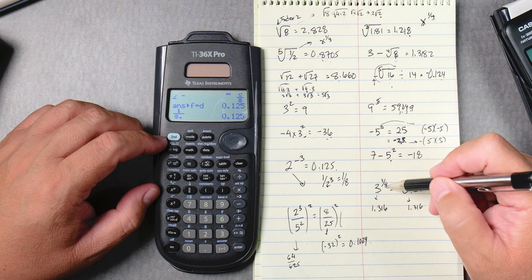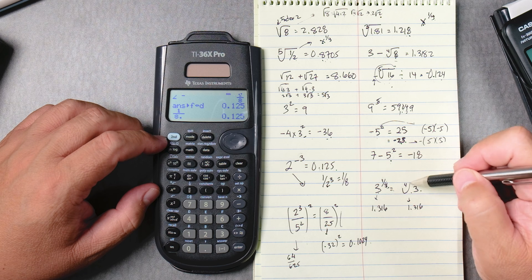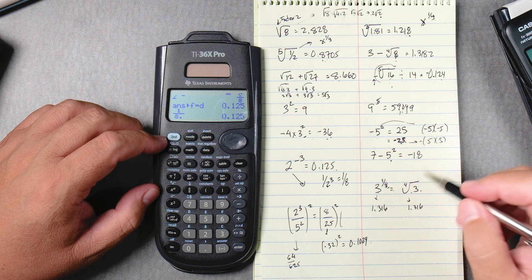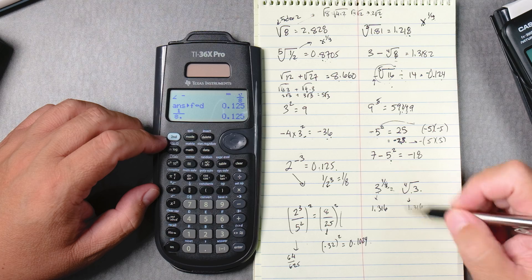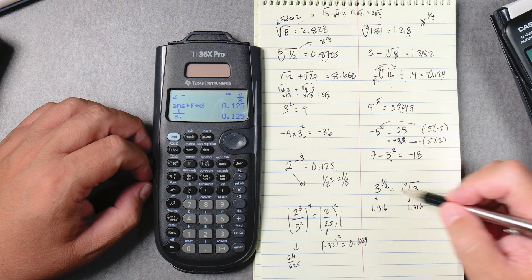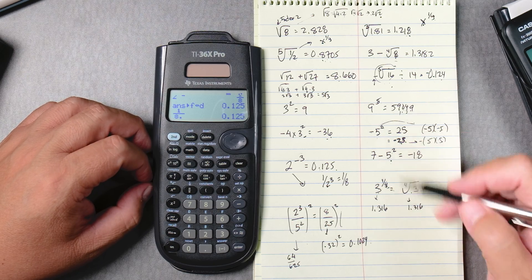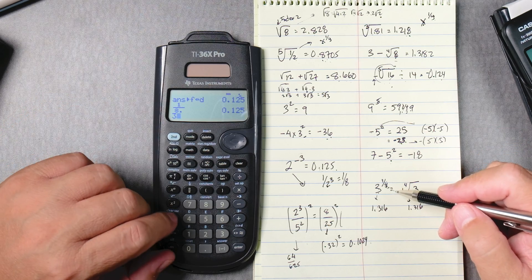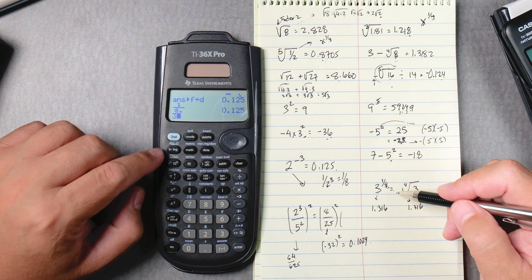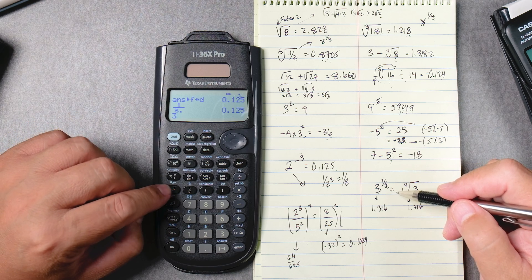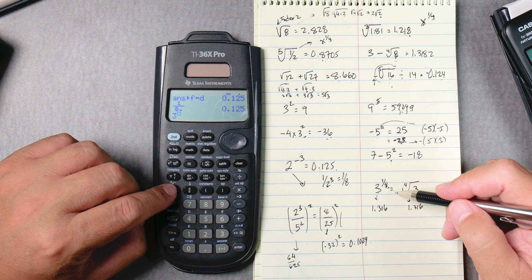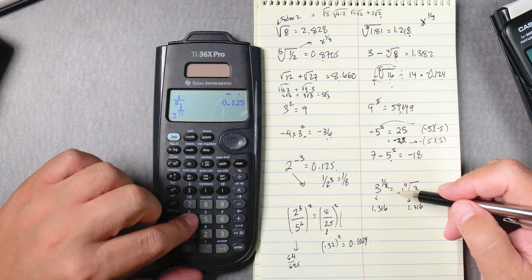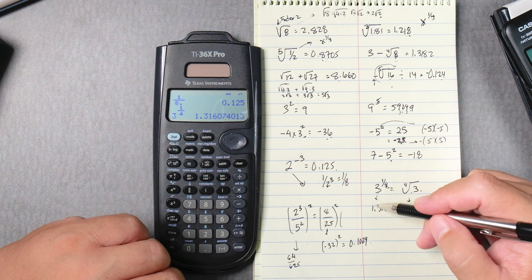Now, 3 to the 1/4 is equivalent to the 4th root of 3 because this 4 can go down as a fraction. These are equivalent to each other. So we got a power and a root and you can see that this is why we study these two ideas together. So 3, 1/4. So we press x box to give us that power and then we can press the fraction button. 1, scroll down, 4, enter, 1.316.